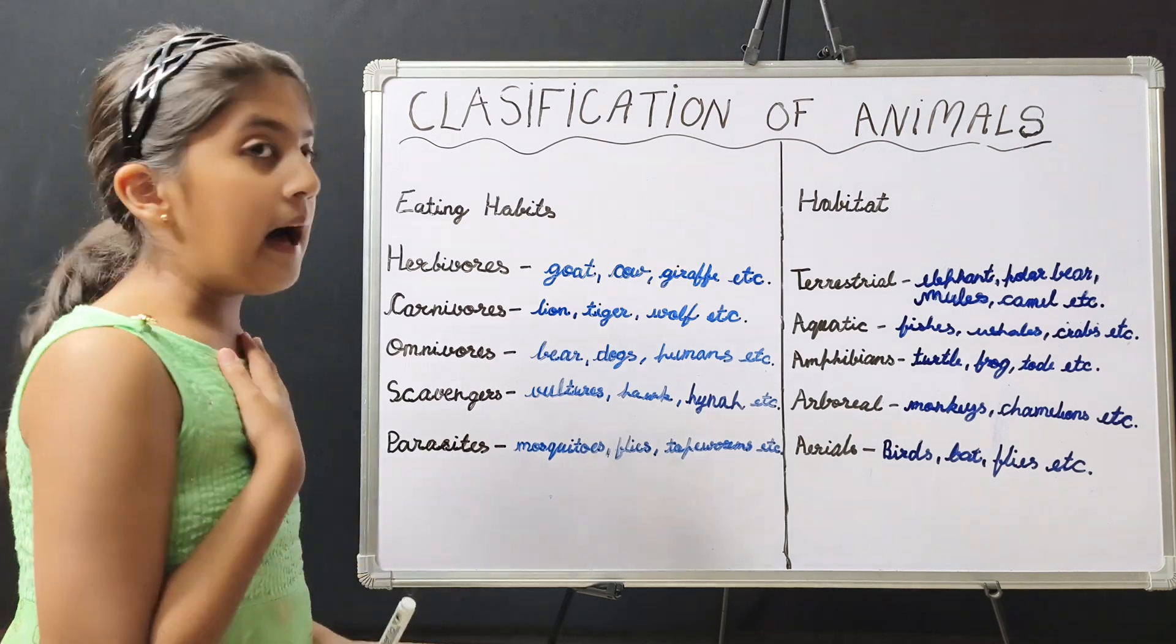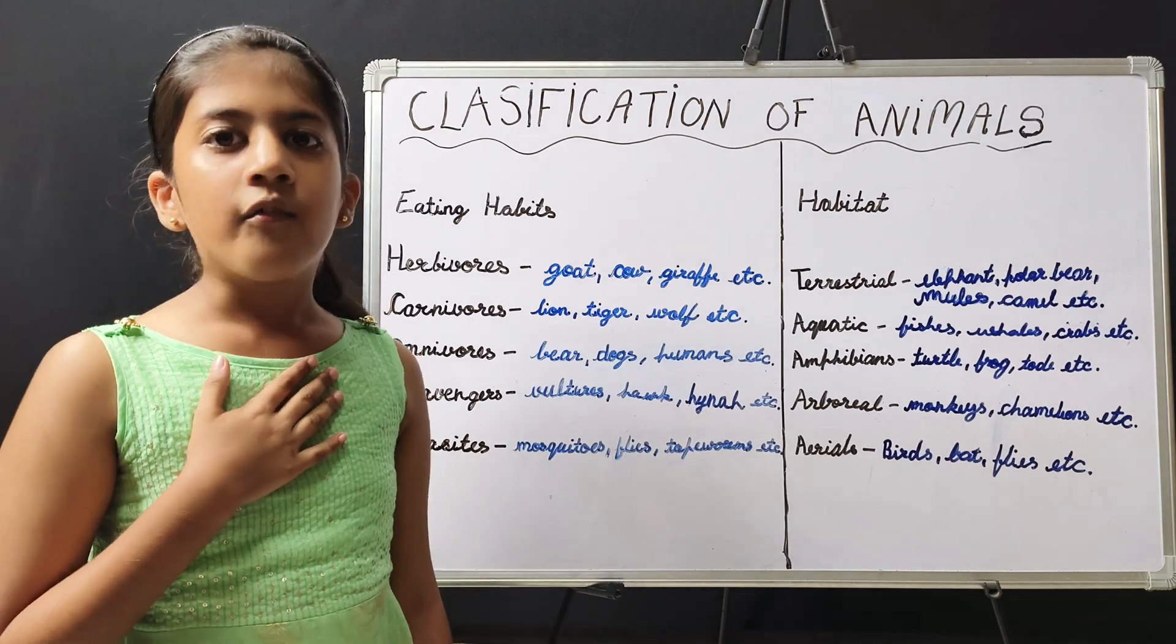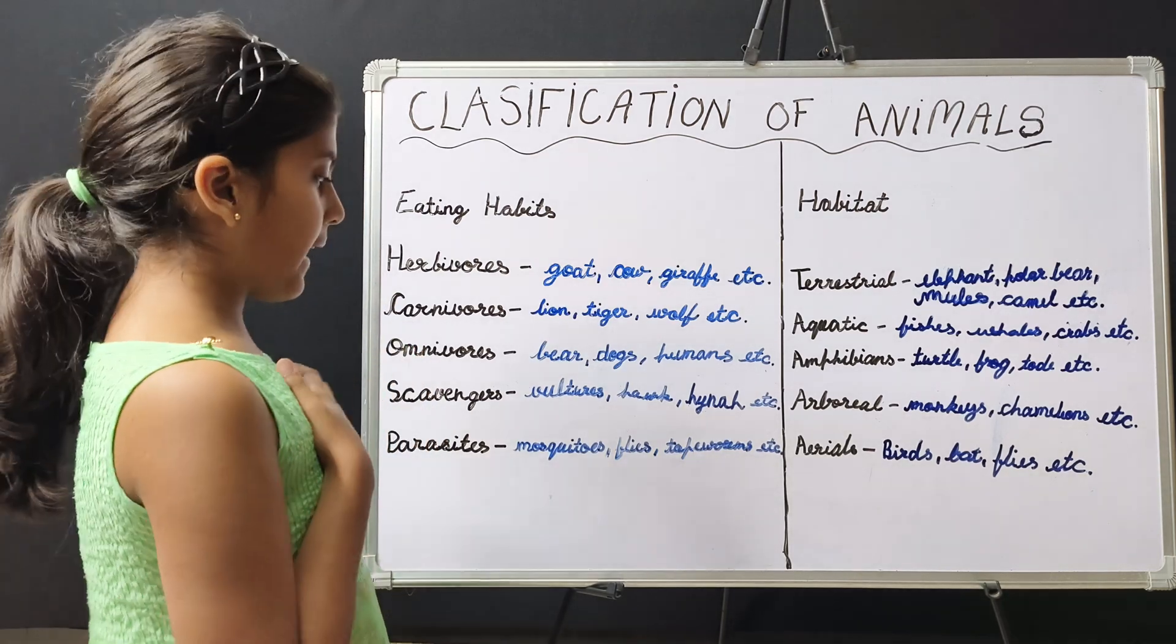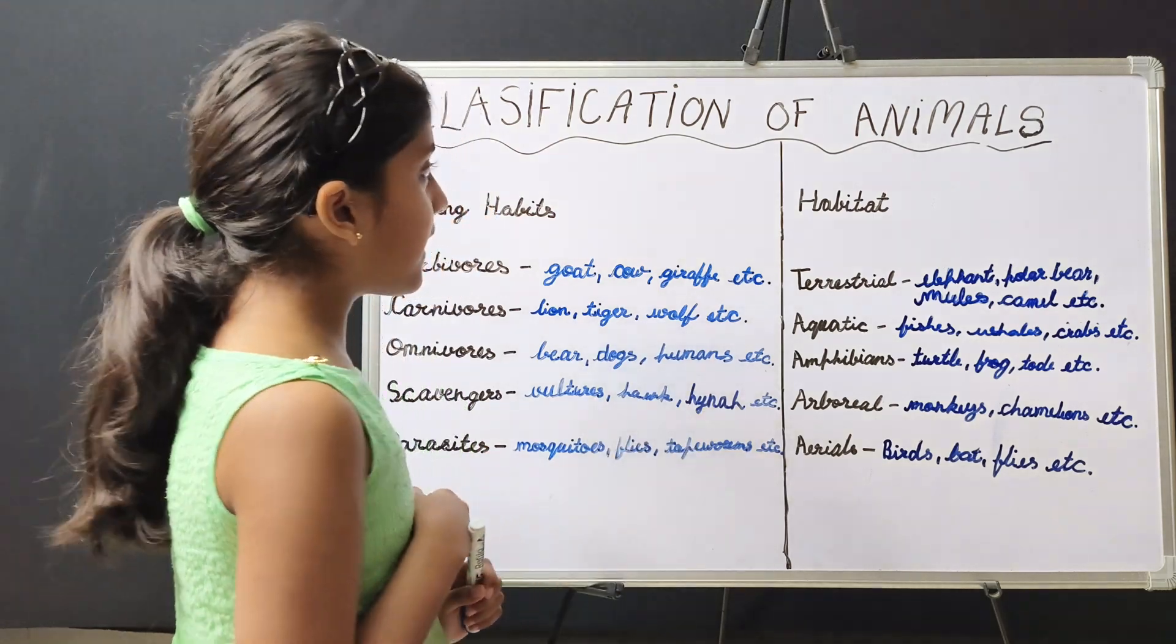Parasites are those animals which depend on other animals for food. For example, mosquitoes, flies, ticks, etc.